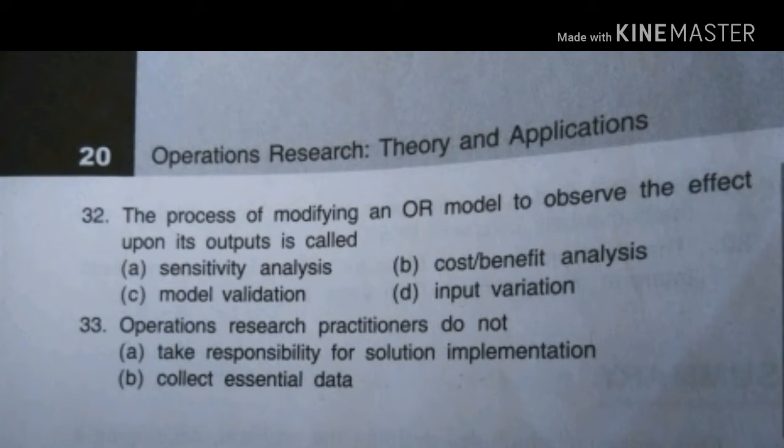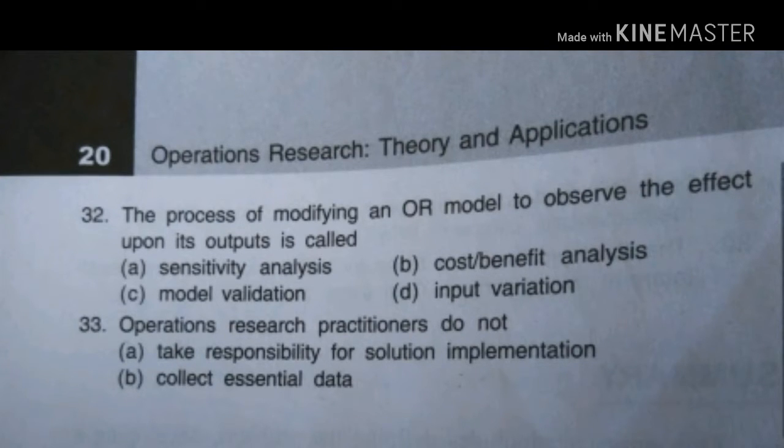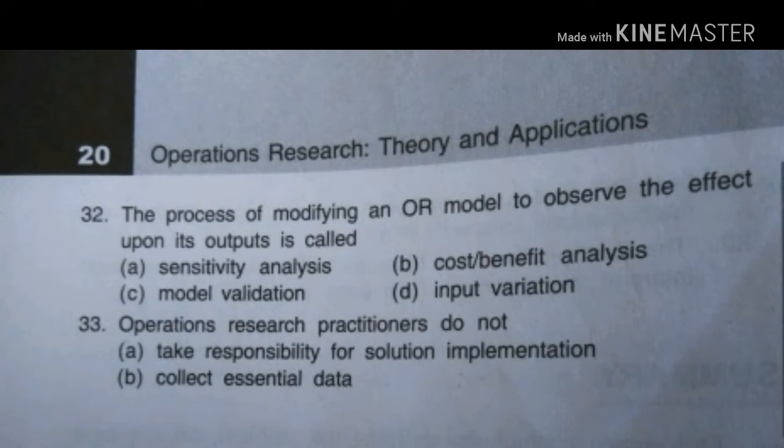The process of modifying an OR model to observe the effect upon its output is called: option is sensitivity analysis, cost-benefit analysis, C is model validation, and D input variation. Answer is A, sensitivity analysis.